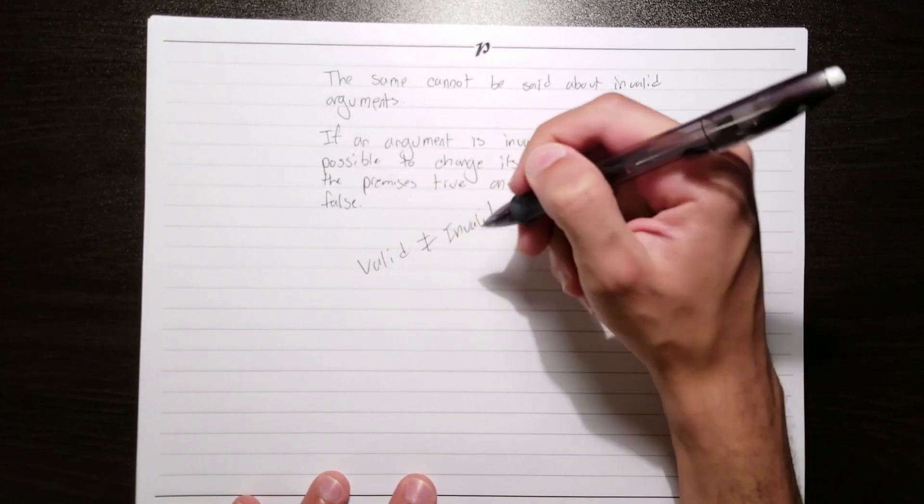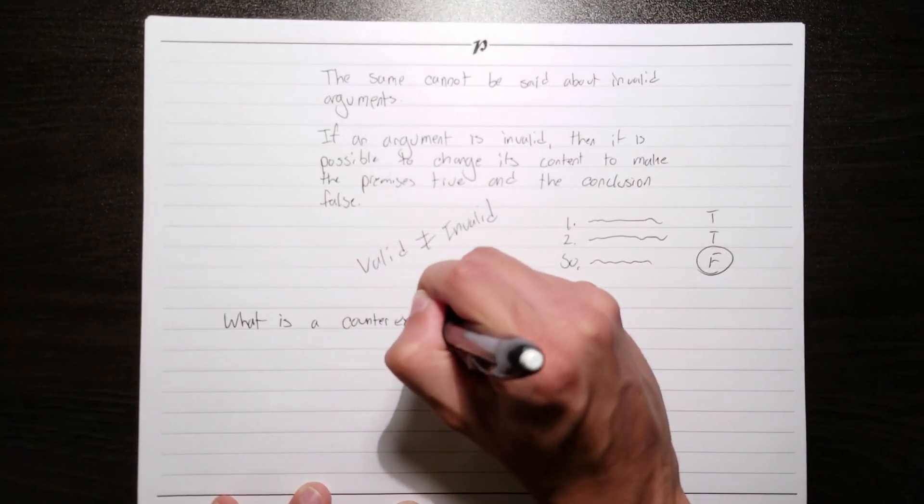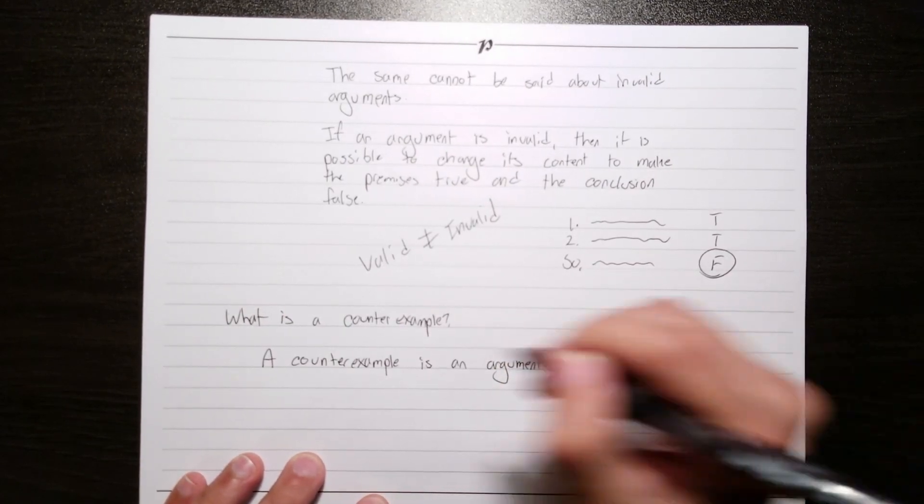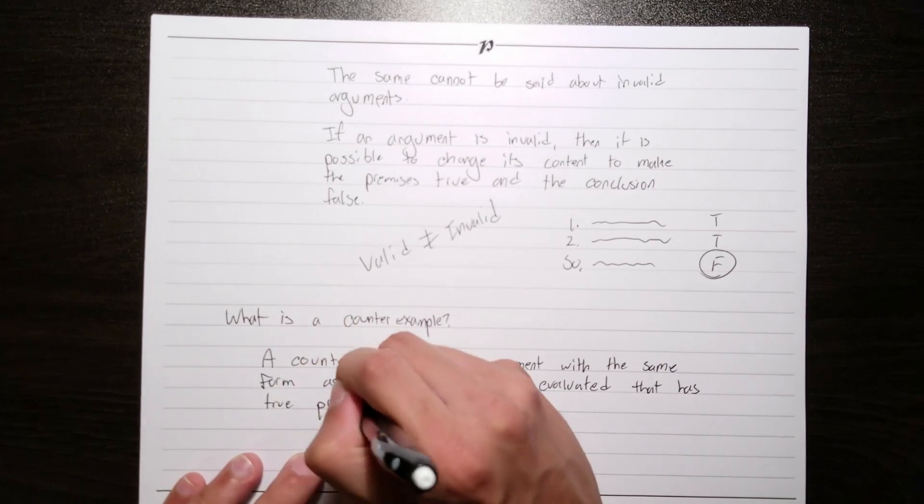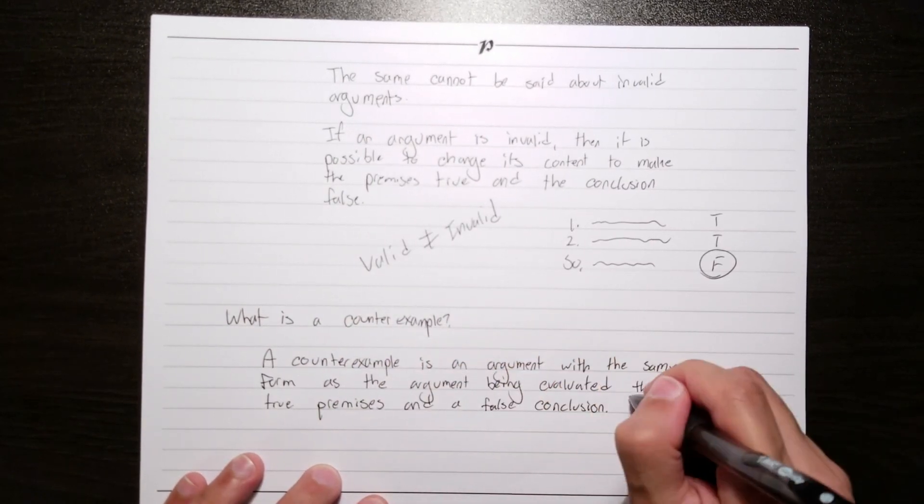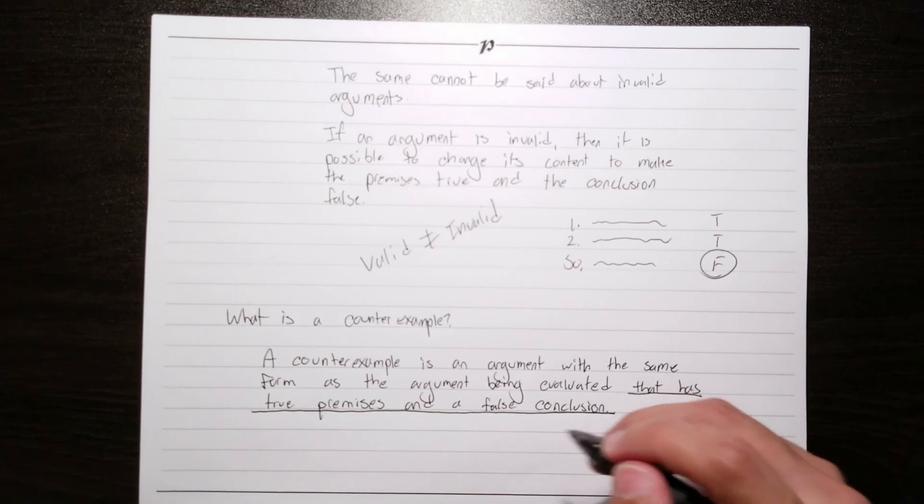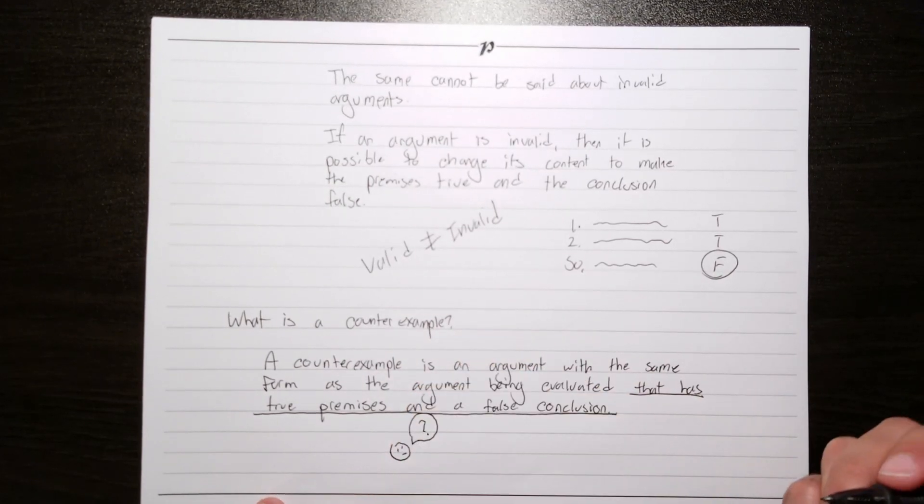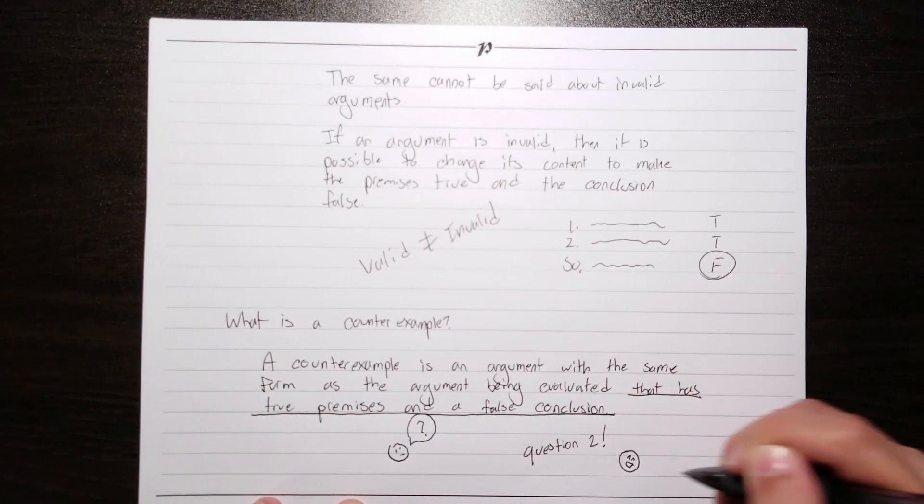So now, we can return to our original question, what is a counterexample? A counterexample is an argument with the same form as the argument being evaluated that has true premises and a false conclusion. This underlined part here being the pivotal part. That's our definition of a counterexample. If it's not totally clear right now, don't worry about it. Once we're finished with question two, you'll be a pro at this.